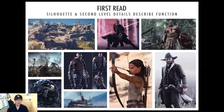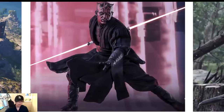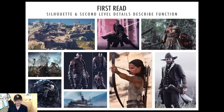Here are some entertainment industry examples. At first glance you instantly know what you're looking at — you're identifying these designs by big second level details that contribute to the silhouette. You see Darth Maul's head, him holding a lightsaber, his cloth moving — you know it's a menacing character. Upon closer examination you see his belt and the lines within his outfit, but those are things you only focus on once you already like the design. Even if you don't focus on them, this character already works.